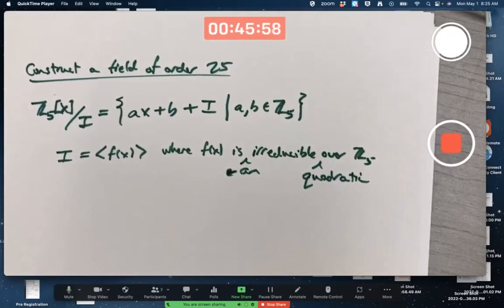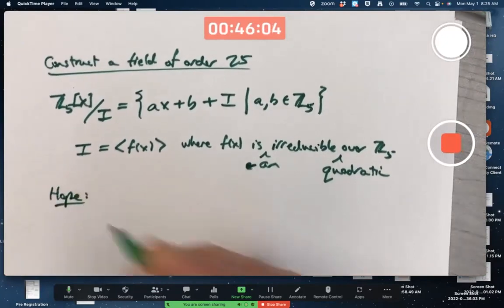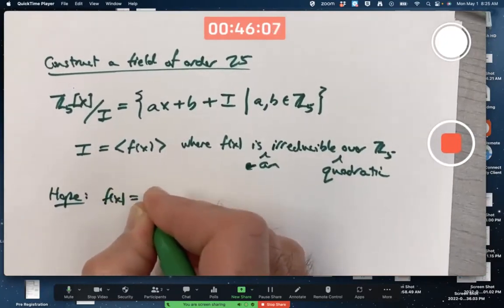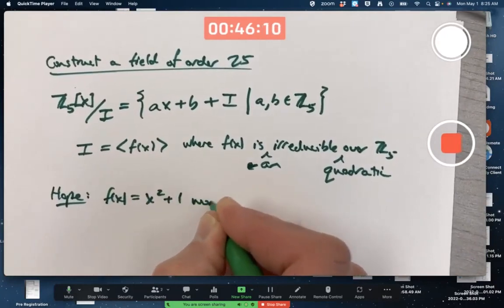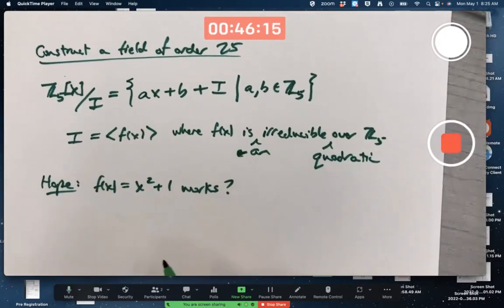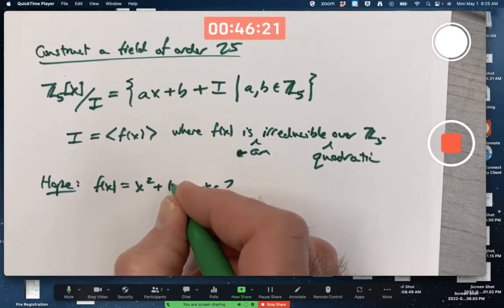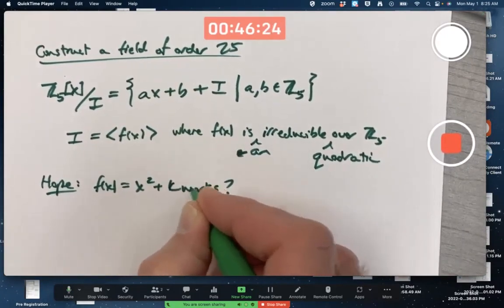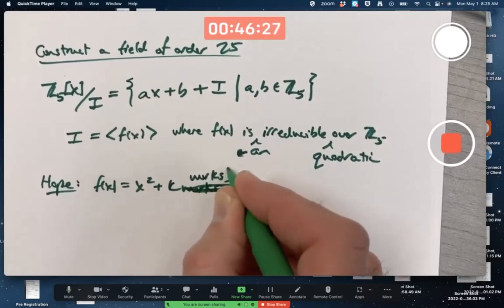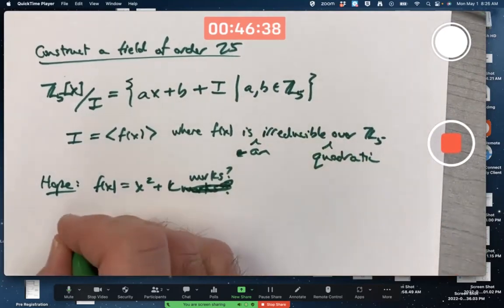So, how do you find such a quadratic? Tell you the truth, it's trial and error. So, you might hope f of x equals maybe x squared plus 1 works. Some simple quadratic like that. Or maybe in general, maybe we should give ourselves flexibility here. x squared plus some constant c works. Maybe c is 1, maybe c needs to be 2, maybe it needs to be 3 or 4. Those are the things that are good enough to check, because we're talking about Z5.